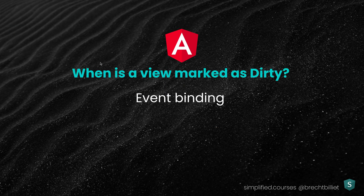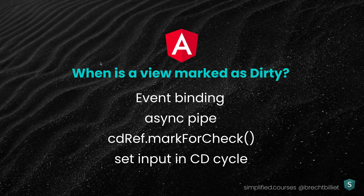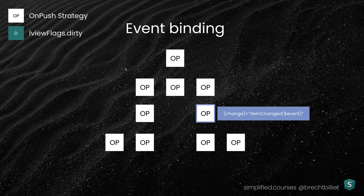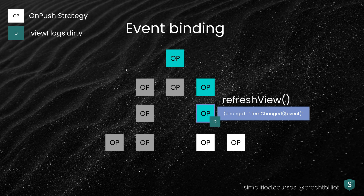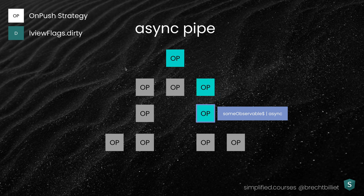When is a view marked as dirty? We can do that through event binding, using the async pipe, or calling markForCheck directly on the ChangeDetectorRef. Event binding connects a component method to an output, and behind the scenes it marks the view and its parents as dirty, so refresh view is called through the tree. Similarly, when using an async pipe on a component, every time an event happens it marks the view and all its parents as dirty, triggering refresh view down the chain.